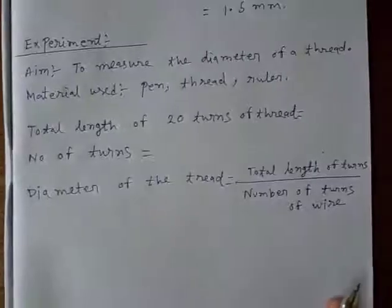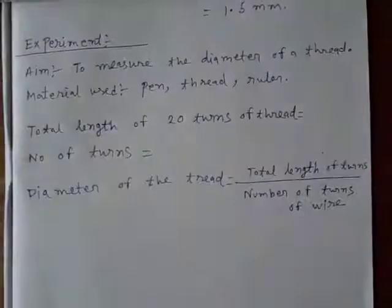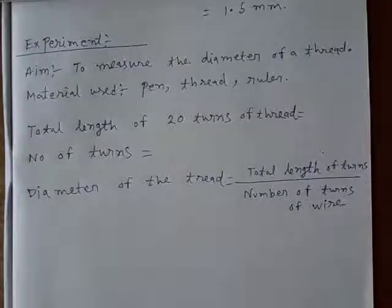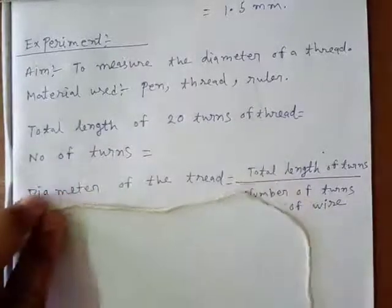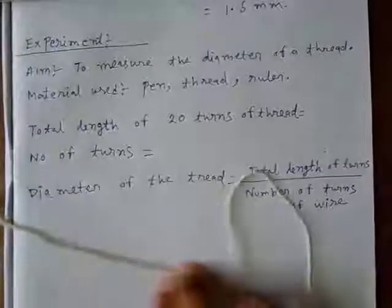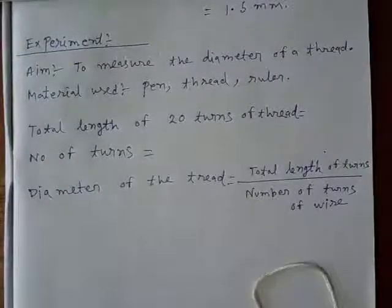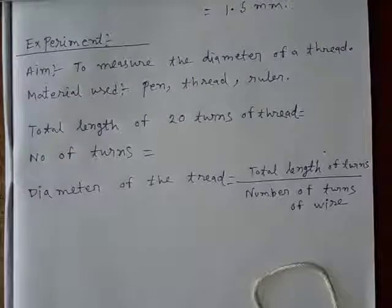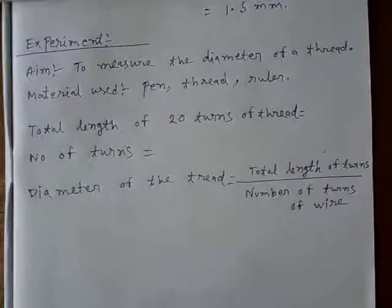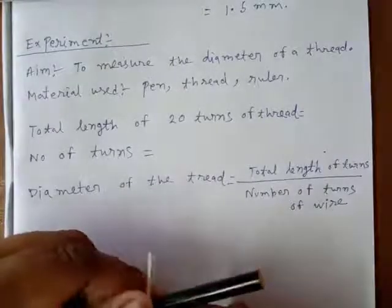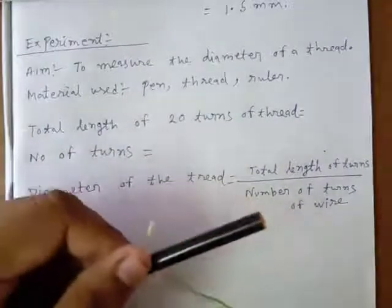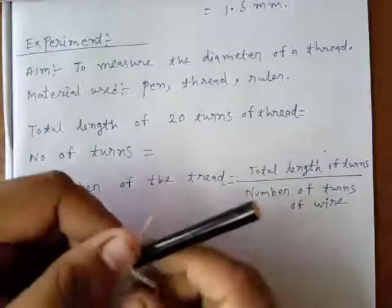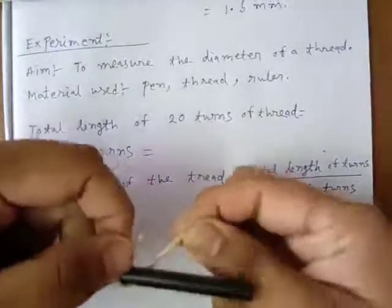The second experiment is to measure the diameter of a thread. Here I am taking a white thread like this and I want to measure the diameter of this thread. How can we do? This experiment I have also discussed in the previous class. First I am taking a pen here.